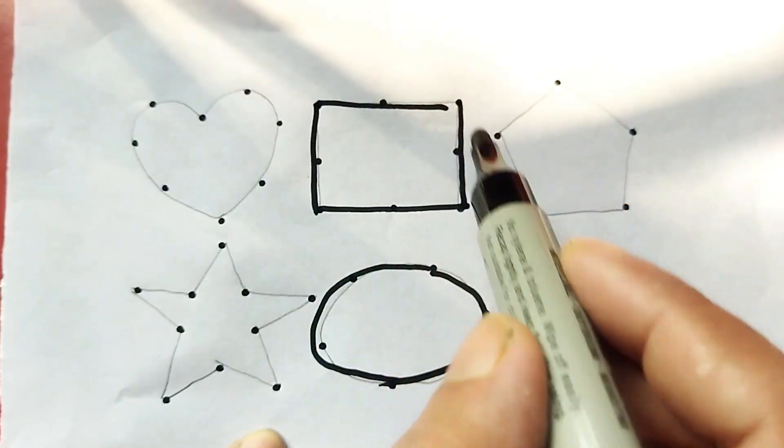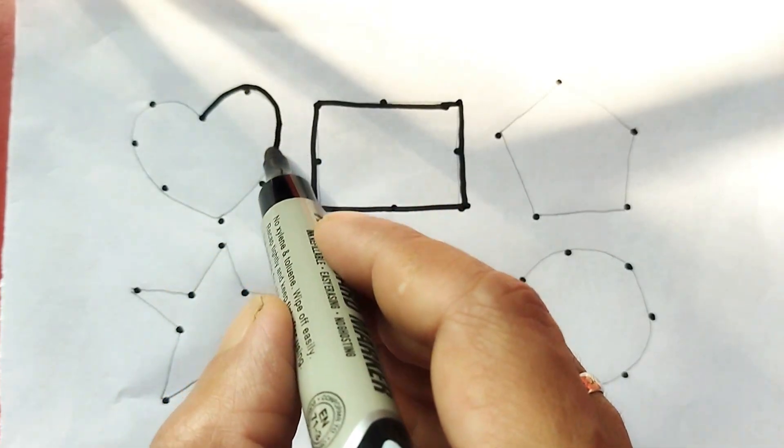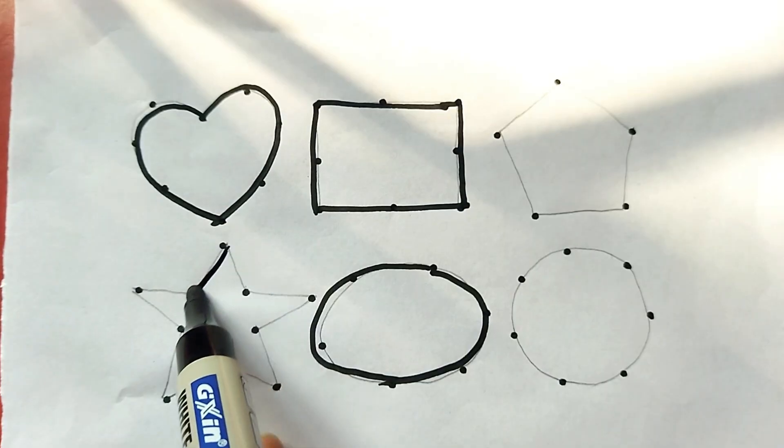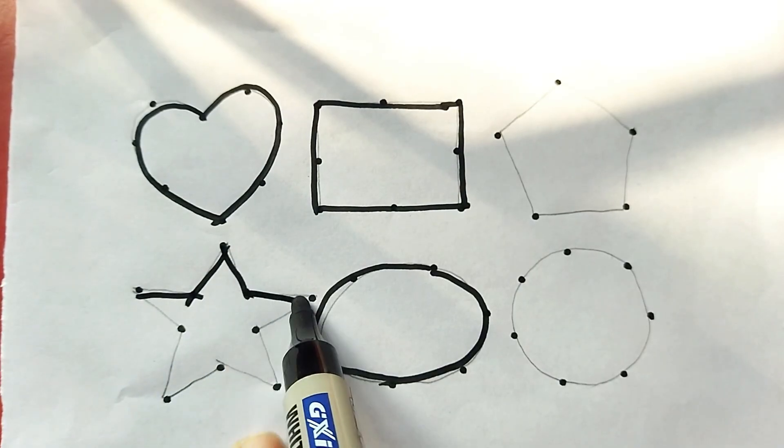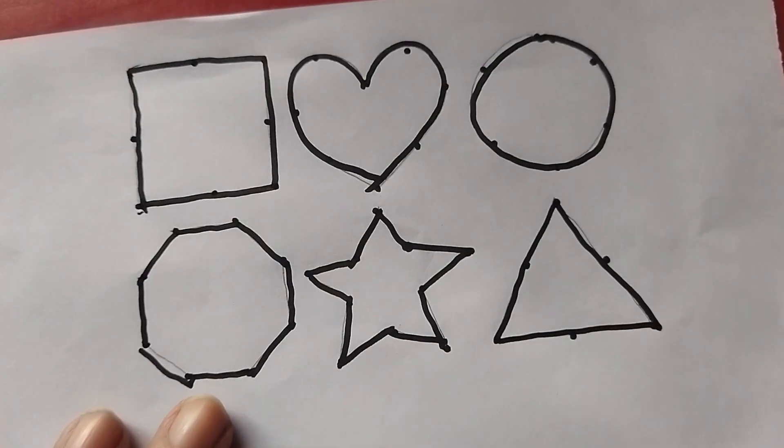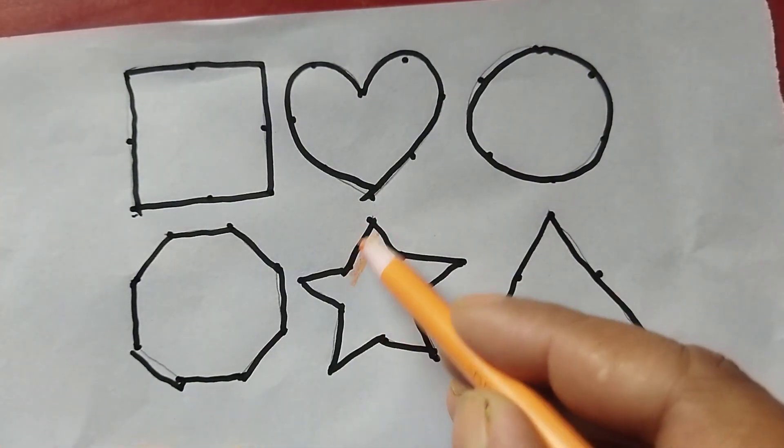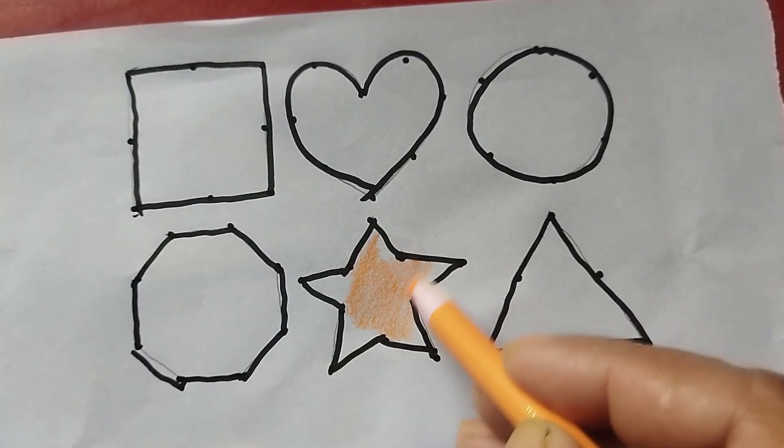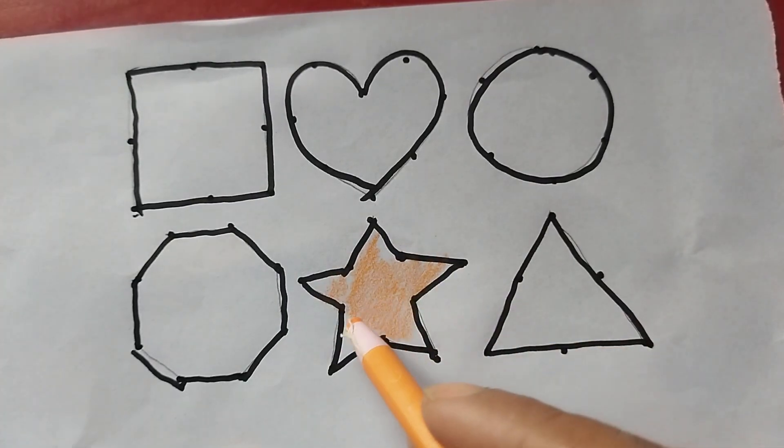This is a rectangle. Heart shape. Star - it has 10 arms. Orange color, this is orange color.